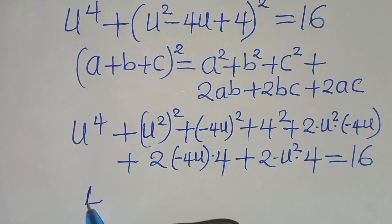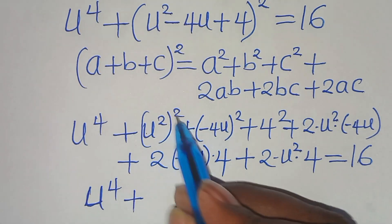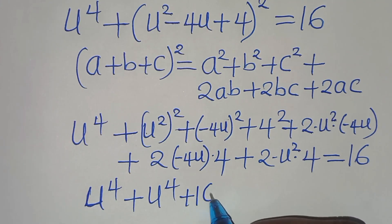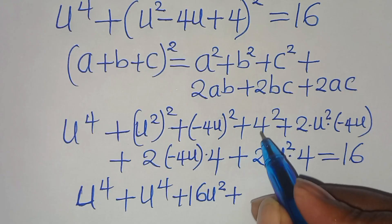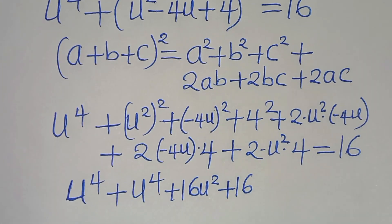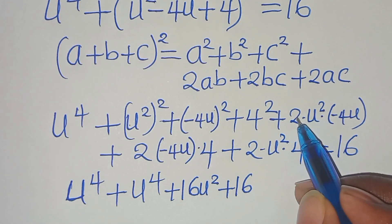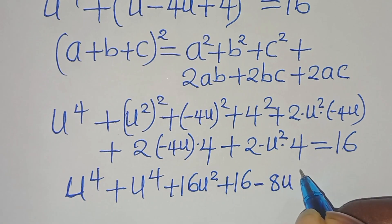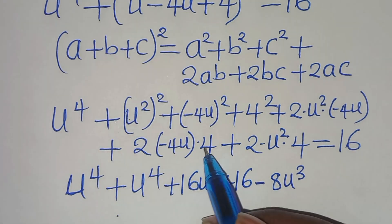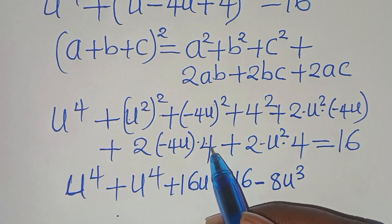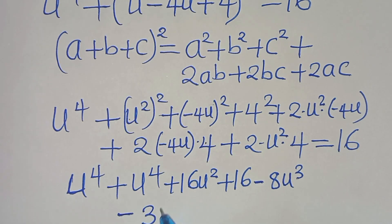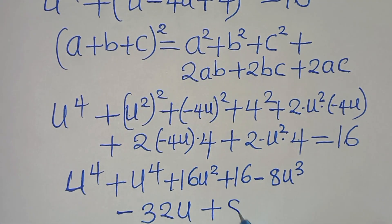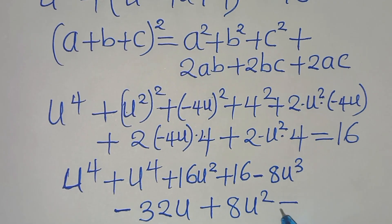So here we have u to the power of 4, plus u to the power of 4, plus 16u squared, plus minus 4u squared which is plus minus 8u to the power of 3, plus 8u squared, then minus 32u, plus 16, equal to 16. Combining terms: 2u to the power of 4, minus 8u to the power of 3, plus 24u squared, and 16 and 16 simplify, minus 32u, equal to 0.